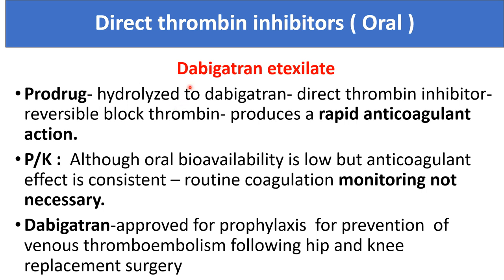Oral direct thrombin inhibitors: dabigatran etexilate is a prodrug that is hydrolyzed into dabigatran, a direct thrombin inhibitor. It reversibly blocks thrombin and produces rapid anticoagulant action. Although oral bioavailability is low, the anticoagulant effect is consistent. Routine coagulation monitoring is not required, and it is approved for prophylaxis and prevention of venous thromboembolism following hip and knee replacement surgery.